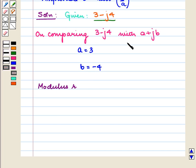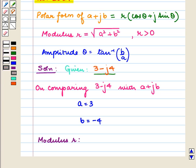To convert it into polar form, we first find modulus r. From the key idea, we know that modulus r is equal to under root of a square plus b square where r is strictly greater than 0.